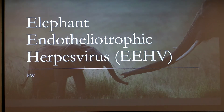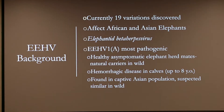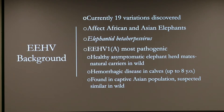Today I'm presenting on elephant endotheliotrophic herpesvirus or EEHV. There are currently 19 different variations or strains that have been discovered, with more research going into identifying more. EEHV affects both African and Asian elephants, but today I'm looking at a particular variation called elephanted beta herpesvirus, specifically EEHV1A, as it's the most pathogenic. It's found in healthy asymptomatic elephant herd mates and can be seen in their trunk washes.